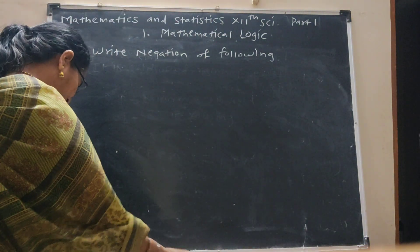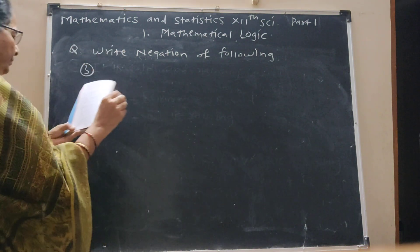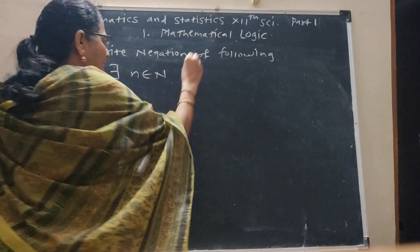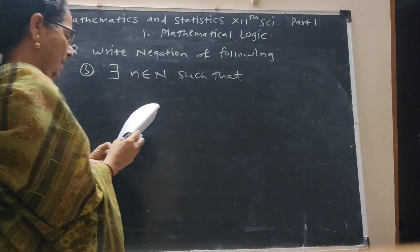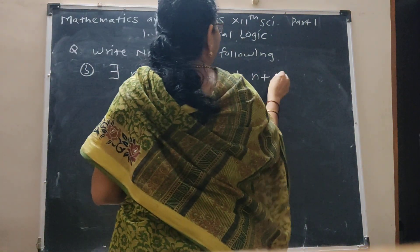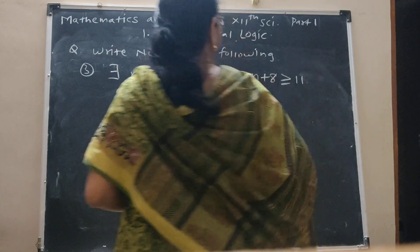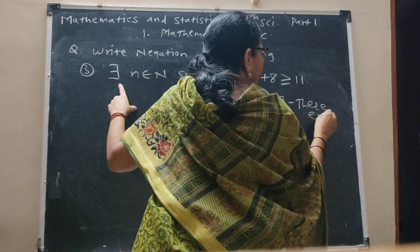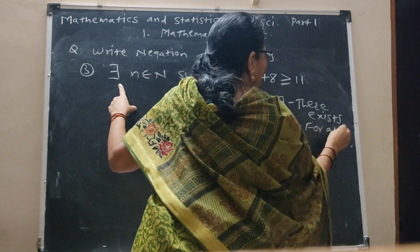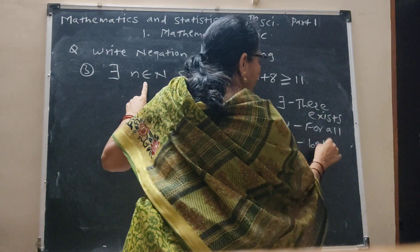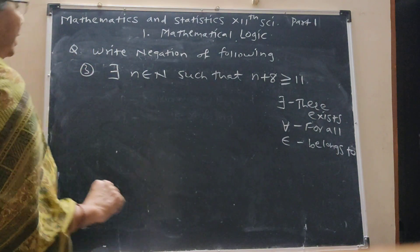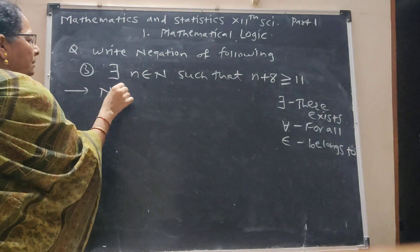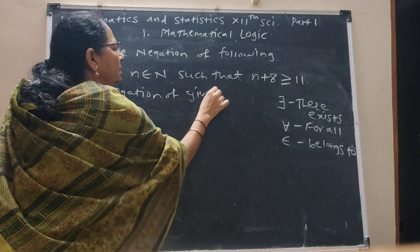Next question, number 3: there exists n belonging to N such that n plus 8. The symbol '∃' means 'there exists' and '∀' means 'for all'. We have to write the negation of such types of statements. When there is 'there exists', we have to write the negation of the statement.